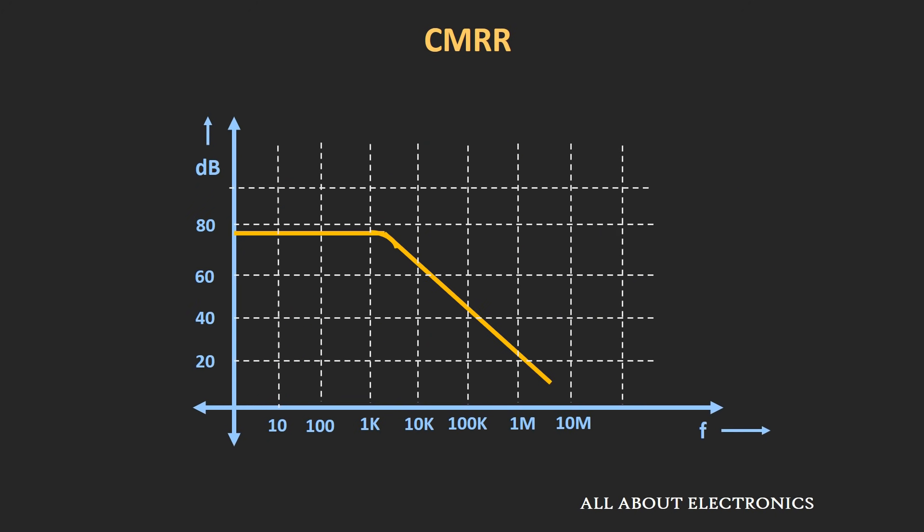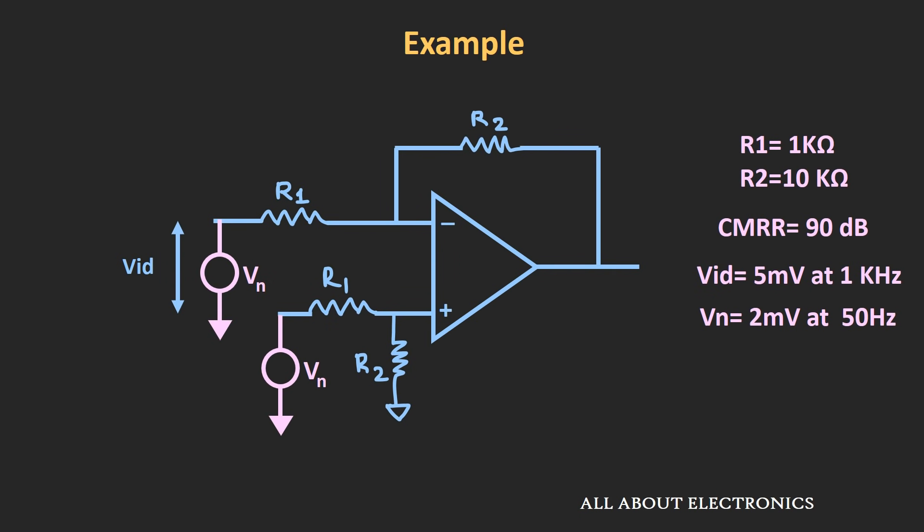The common mode rejection ratio is also a function of frequency. As frequency increases, the ability of the circuit to suppress common mode noise reduces. For the given example, if the common mode input signal is a high-frequency noise, the circuit will not suppress it as efficiently as it suppressed the 50 Hz noise. However, if the input signal frequency is much lower than the high-frequency noise, the input signal can still be filtered out using a low-pass filter.